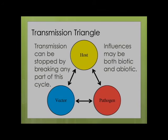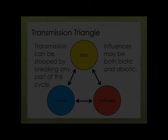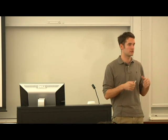Whether we're talking about humans, fleas, and Yersinia pestis, or birds, mosquitoes, and avian malaria, the transmission triangle remains the same: you must have the host, the pathogen, and the vector at all times. You can break transmission by stopping any portion of this, through either abiotic or biotic factors. A biotic factor might be increased predation on the vector. An abiotic factor might be climate — you don't get many insect vector diseases in the dead of winter because the insect is not in the life stage that transmits the disease, or the population is in diapause.